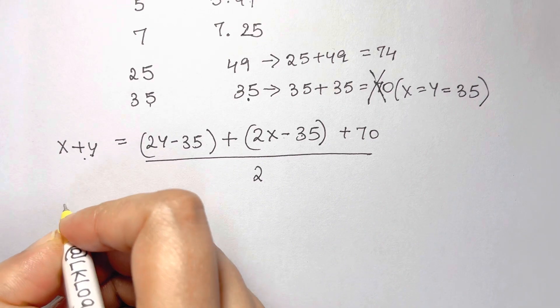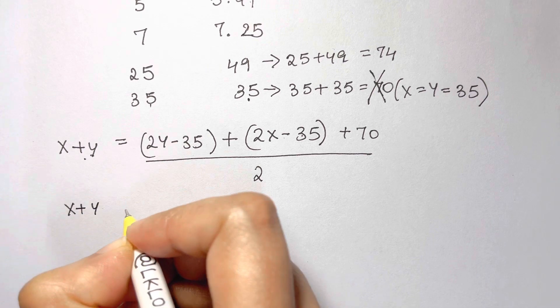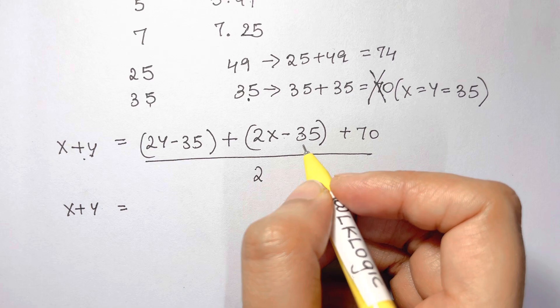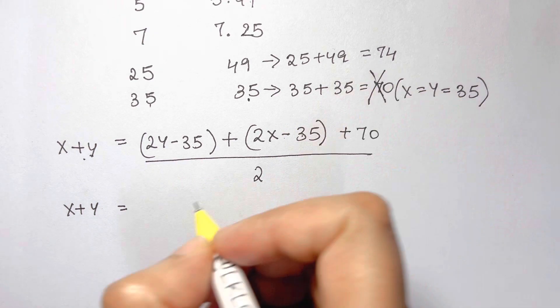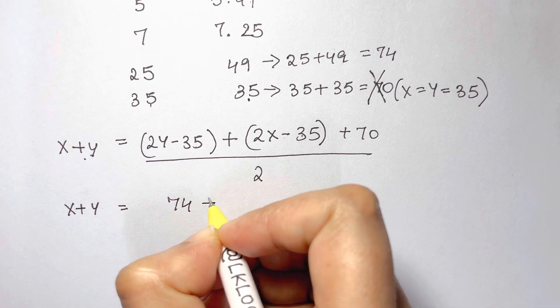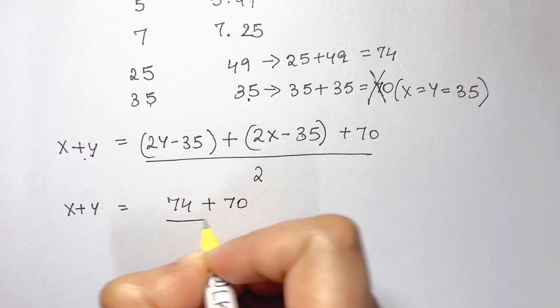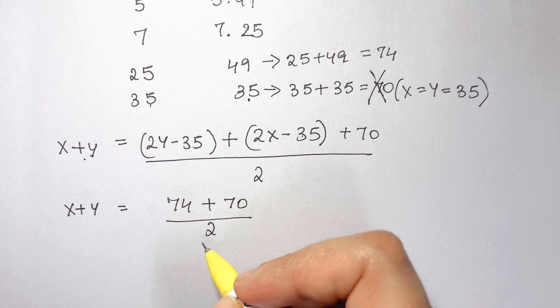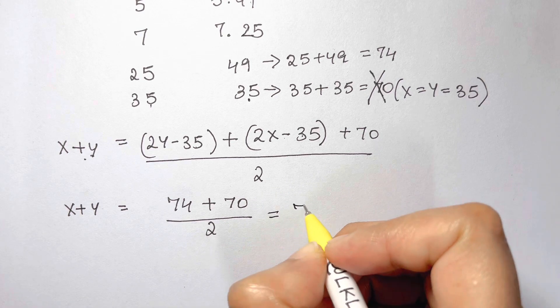So we get x plus y in terms of 2y minus 35 and 2x minus 35, 74 plus 70 by 2. And it is the average of 70 and 74. That will be 72.